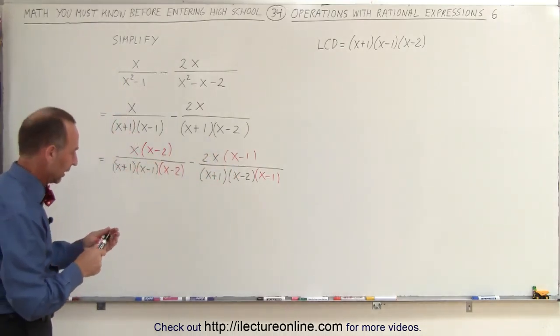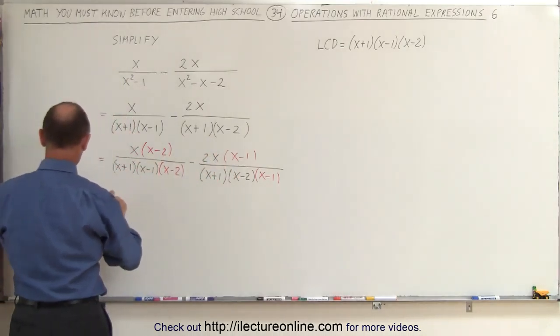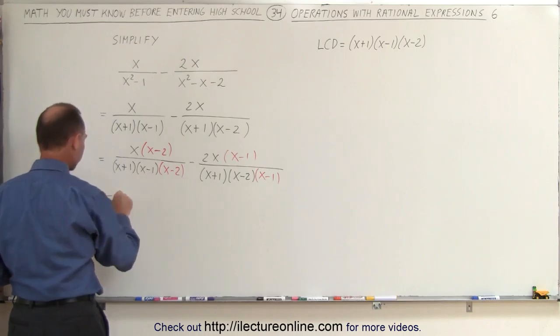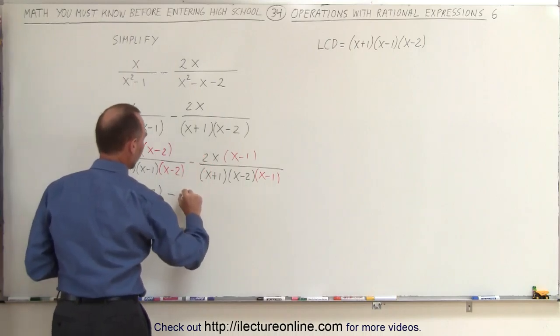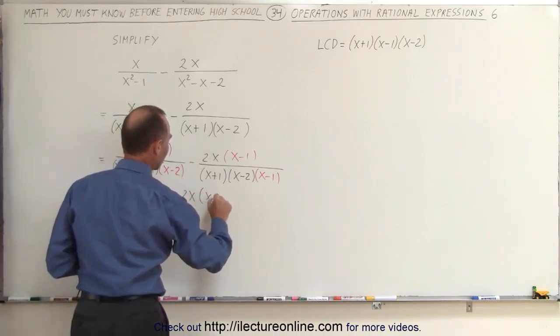Again, when you cancel these out, you end up with what you started with. So again, we didn't change anything. But now we can see that we have the same common denominator, so the two numerators can be written over one single common denominator. So let's do that.